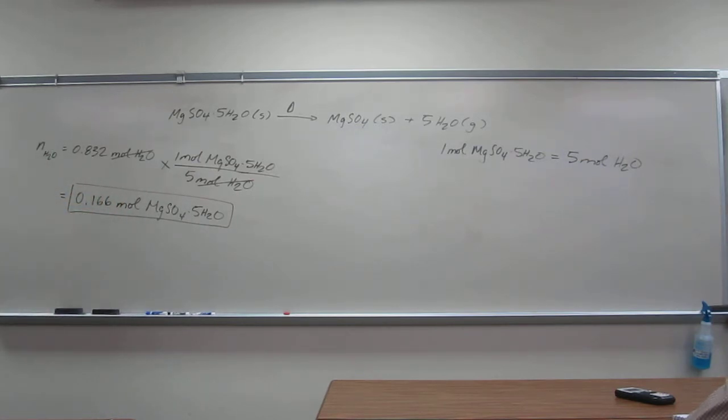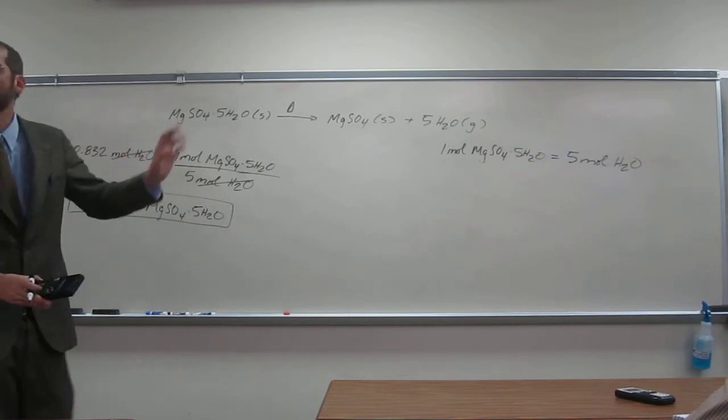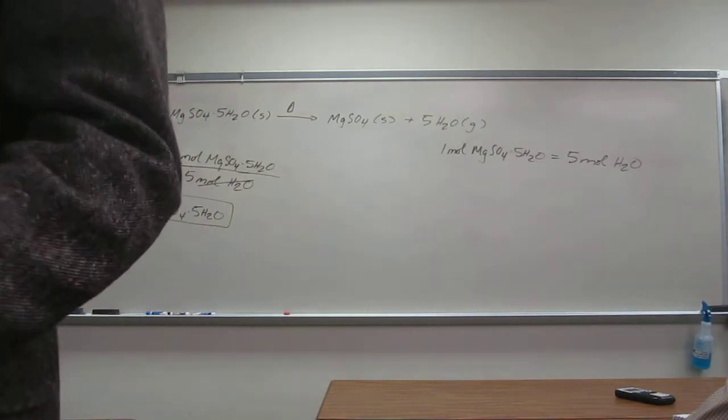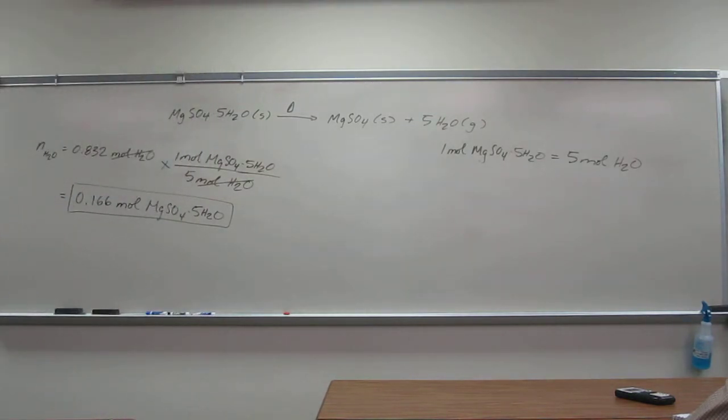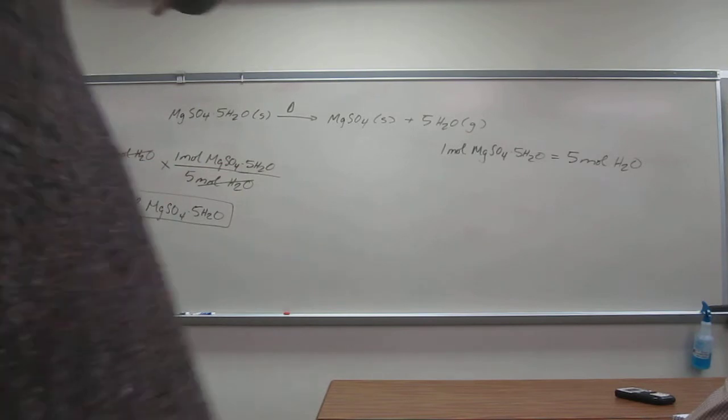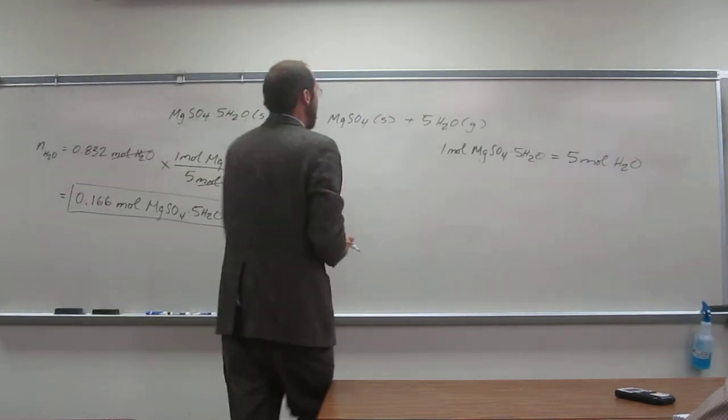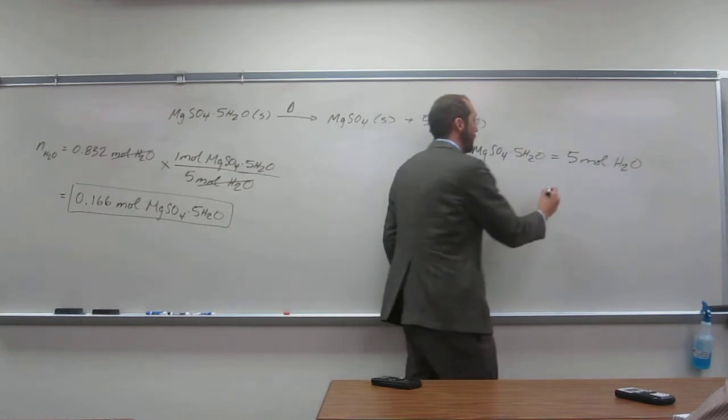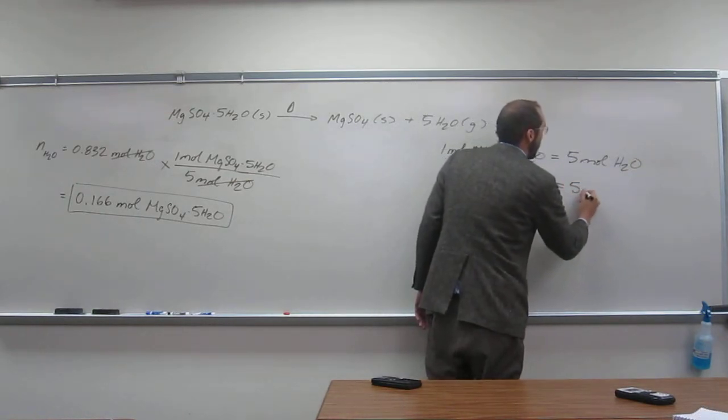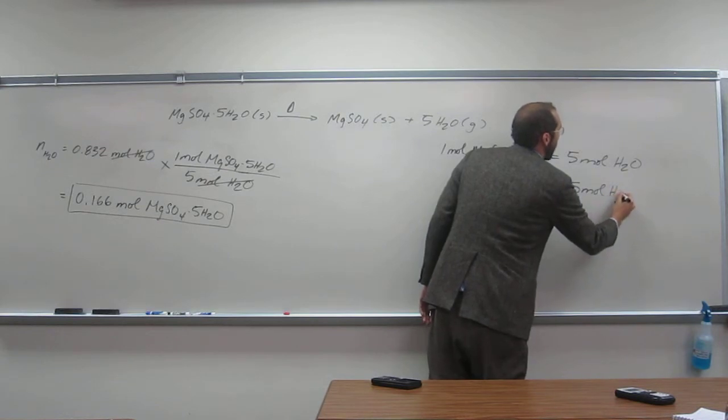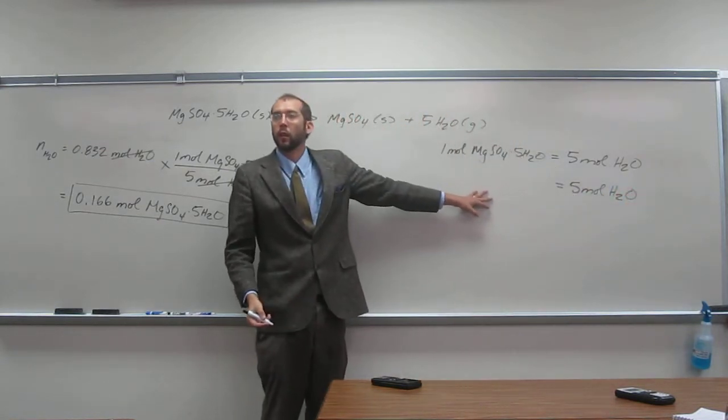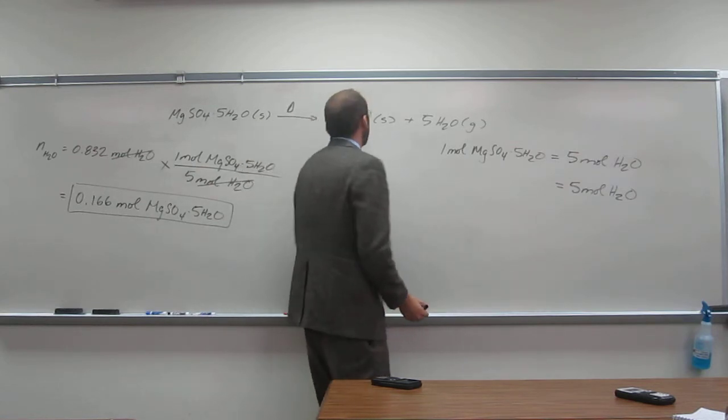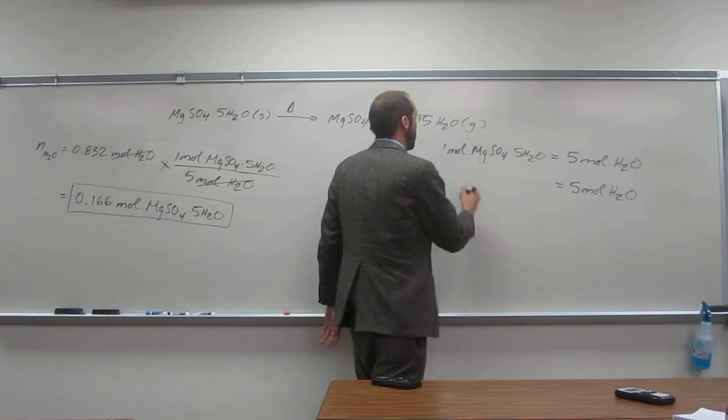Can we figure out how many moles of magnesium sulfate, the dried magnesium sulfate, we produced? Could we do that? Yes. How would we do that? What would be the conversion factor? How about, let's write the conversion factor here instead of doing that problem. So we started out with moles of water, so that would be in here, right? So what would five moles of water equal to? One mole of magnesium sulfate, right? Because it's a one to one to five.